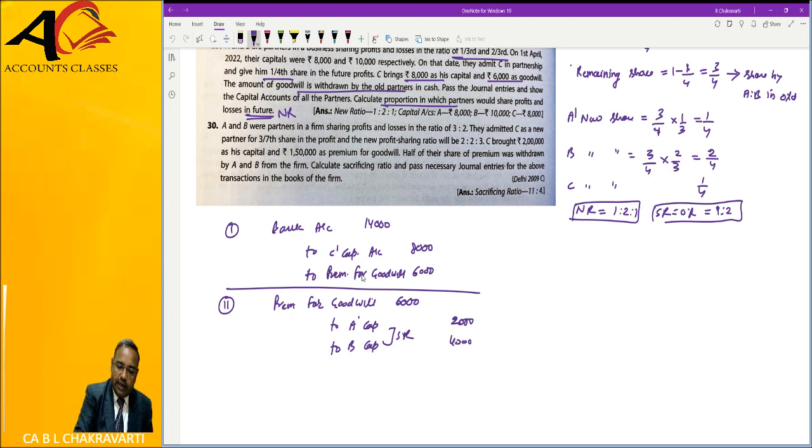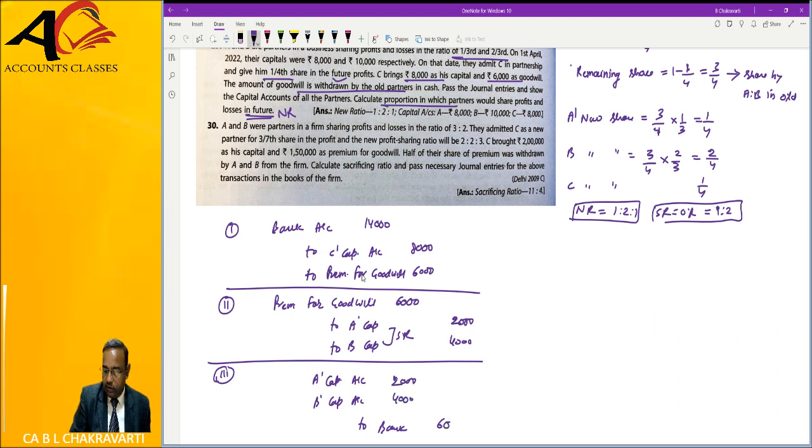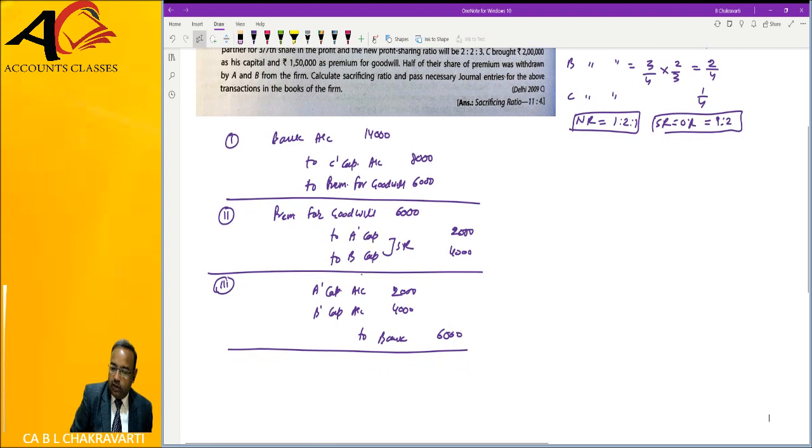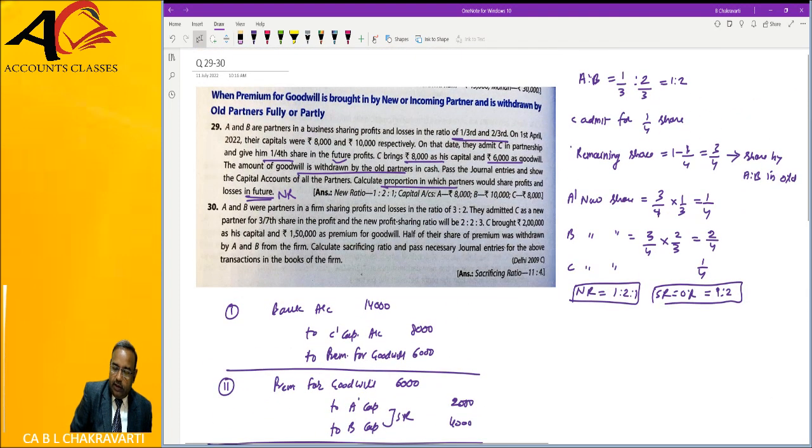In the question, if it has been withdrawn, people have paid. So a withdrawal will be made. That will be A's capital account debit, B's capital account debit, to bank 2000, 4000. If they have not written this as half a withdrawal, then they have half a withdrawal.